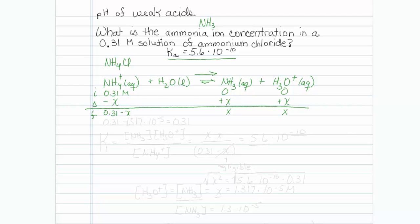Now we can set this equal to the equilibrium expression. The equilibrium expression for this is equal to NH3 times hydronium over NH4 plus. So I have represented NH3 and hydronium as x's and my starting concentration as 0.31 minus x. And this is equal to the equilibrium constant 5.6 times 10 to the minus 10.